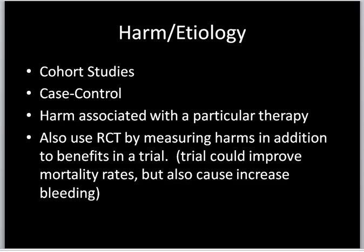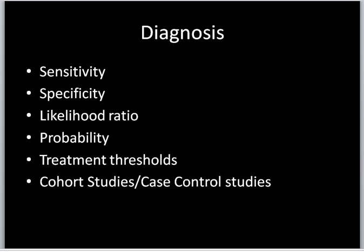For example, a trial could improve mortality rates but also increase bleeding in a patient. For diagnosis questions, you look at how sensitive or specific an article is, examining likelihood ratios, the probability of an event occurring, and treatment thresholds. These are often found in cohort studies or case control studies.